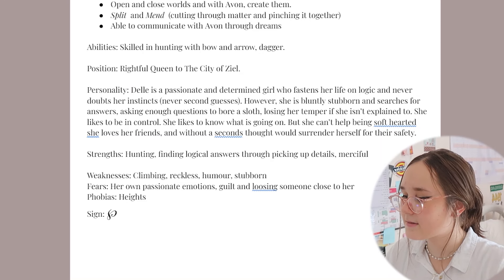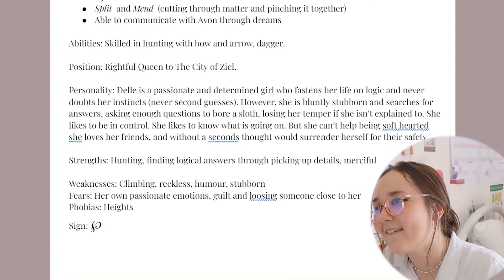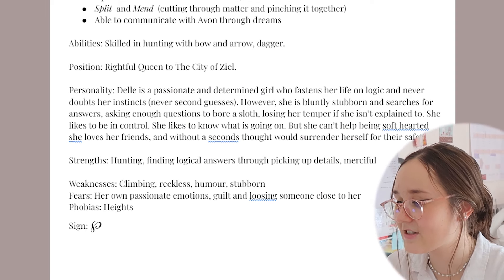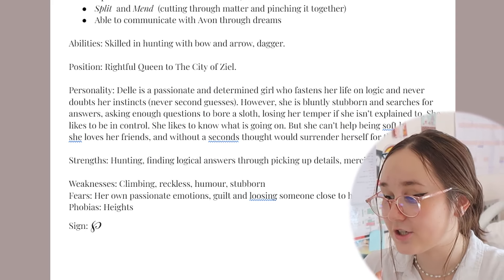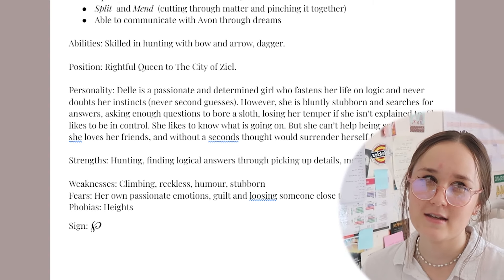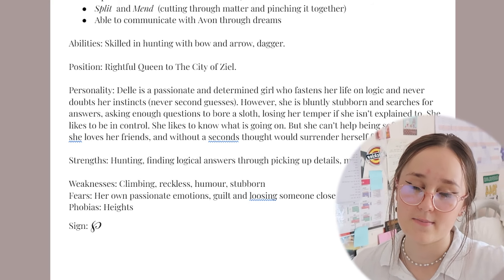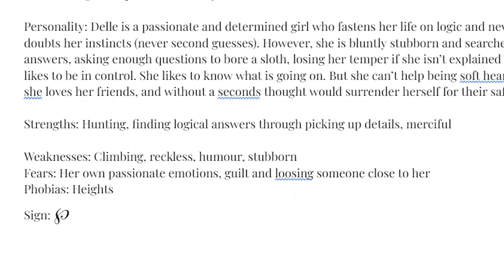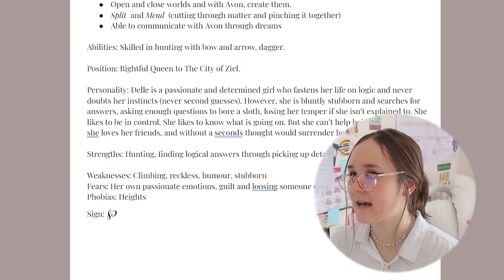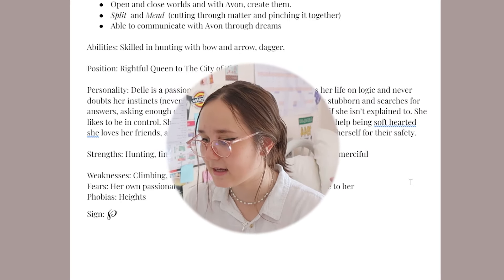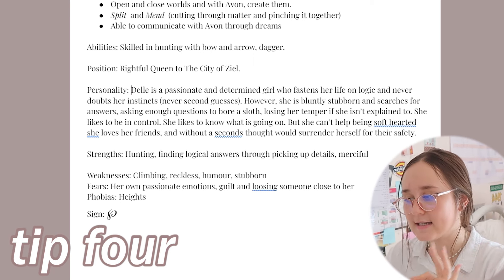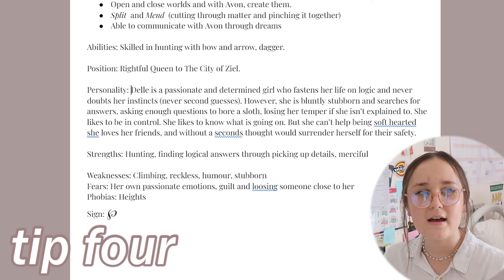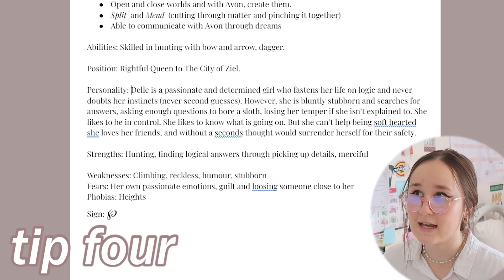Down below, we have weaknesses. She's actually really bad at climbing, even though she's a hunter — I think it's kind of funny. She's reckless, has a very bad sense of humor, and she's extremely stubborn. Even though stubbornness can be seen in a light of being determined, stubbornness can actually be a bad thing. Down below we have fears. She's extremely driven on instinct, passion, and emotion, so she's kind of scared that will get in the way of her usual logical thinking. That's almost a growth arc throughout the book — as she gets close to her friends, her logic begins to deplete and she starts acting on emotion rather than pure logic.